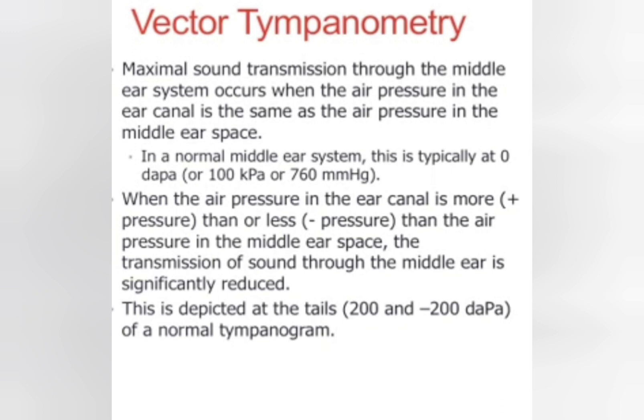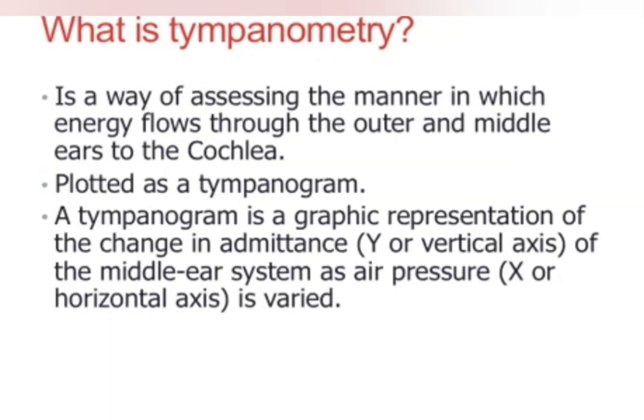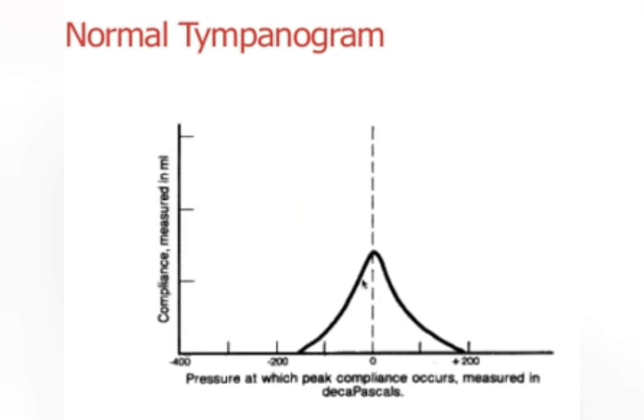In a normal middle ear system, this typically occurs at atmospheric pressure, which is around 60 mmHg. In tympanometry, we change the pressure on the x-axis from minus 200 to plus 200 dPa and measure the compliance of the tympanic membrane on the y-axis. This produces the normal tympanogram, where the peak occurs at 0 dPa or normal atmospheric pressure — that is type A at 0 dPa.